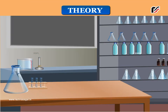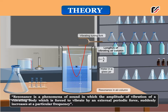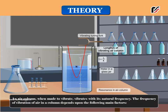Theory: Resonance is a phenomenon of sound in which the amplitude of vibration of a vibrating body, which is forced to vibrate by an external periodic force, suddenly increases at a particular frequency. An air column, when made to vibrate, vibrates with its natural frequency. The frequency of vibration of air in a column depends upon the following main factors.